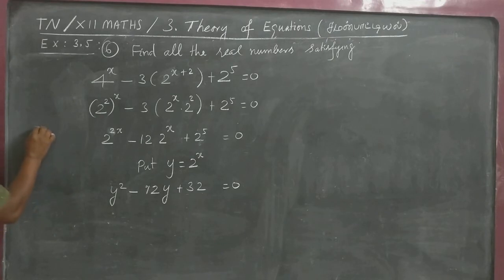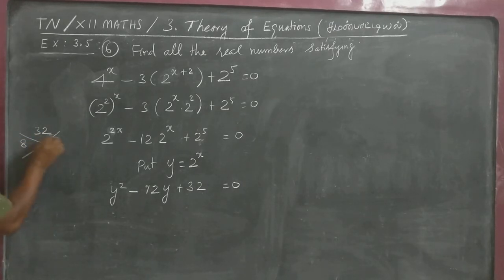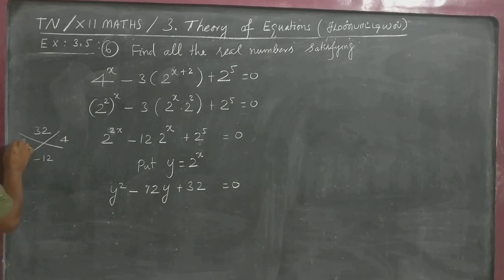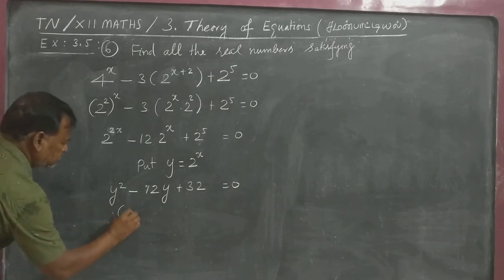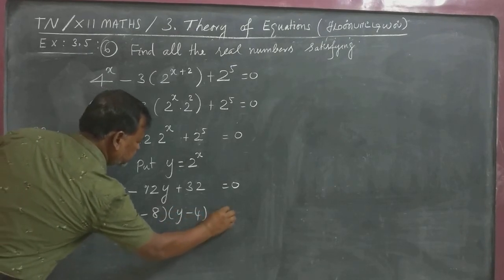The multiply value should be 32 and sum minus 12. For 32, minus 8 into minus 4 plus 32, it becomes minus 12. So the answer Y minus 8 into Y minus 4 is equal to 0.